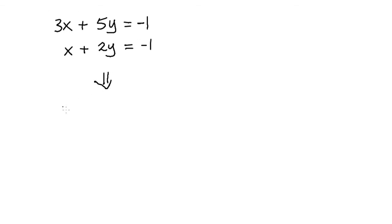This can be rewritten in the form of a matrix multiplication: (3, 5; 1, 2) multiplied by (x; y) equals (minus 1; minus 1).